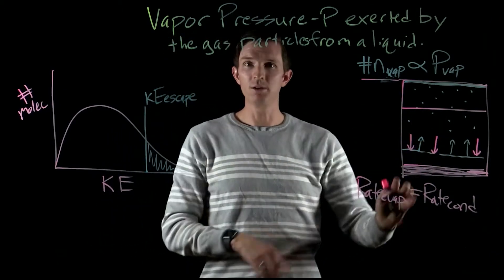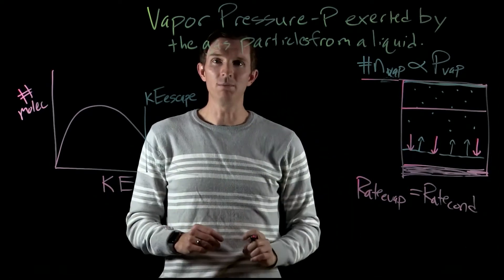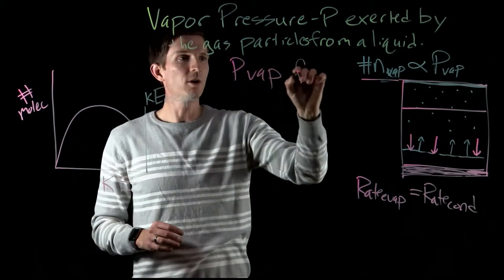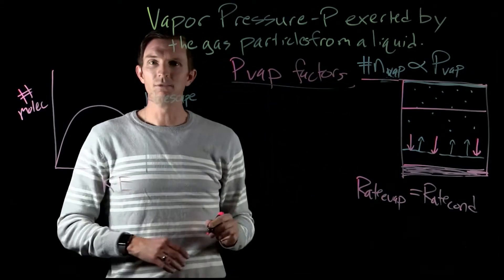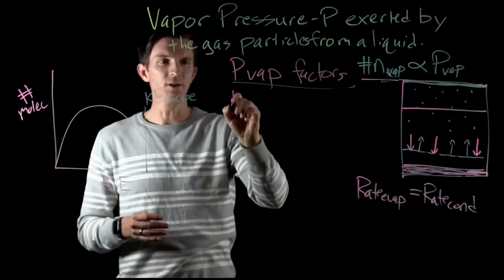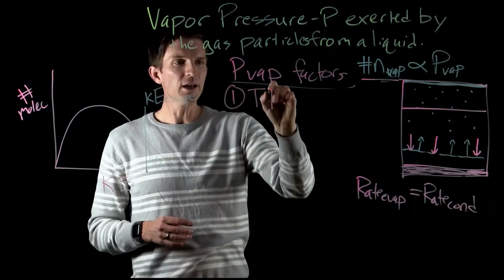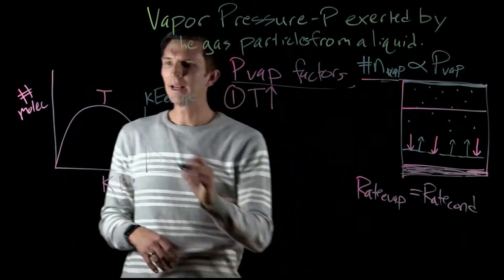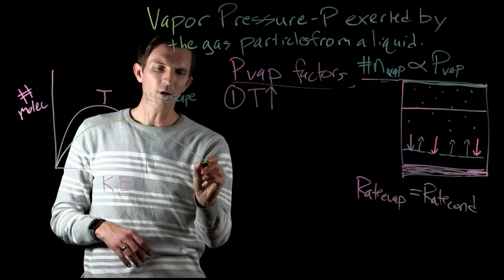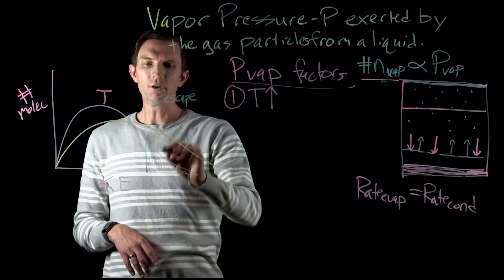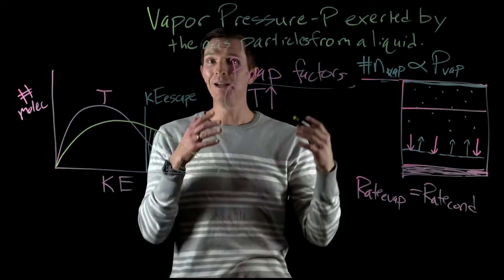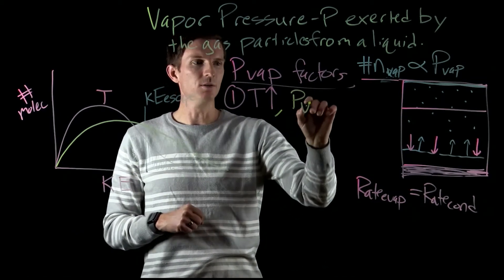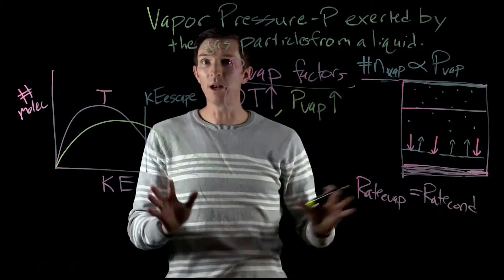The only variables that affect vapor pressure are the same ones we considered when we talked about evaporation rates. The first factor is temperature. If we increase the temperature, looking at the kinetic energy distribution curve, we're going to have more particles with a kinetic energy greater than the escape kinetic energy. That is going to increase the vapor pressure, no matter what the substance is.